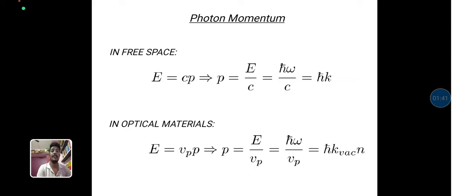The next one is the photon momentum configuration. In free space, E is equal to cp. When we need p is equal to E divided by c. Substituting E is equal to h omega divided by c. Omega by c is equal to k. That is the k wave vector h cross k.